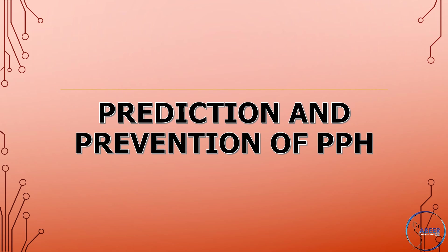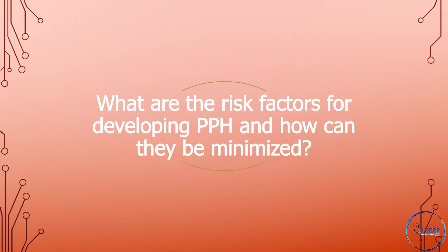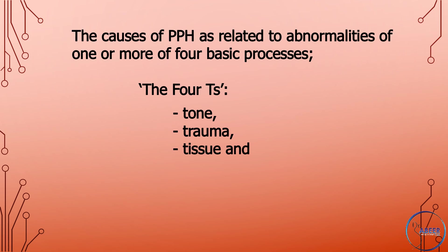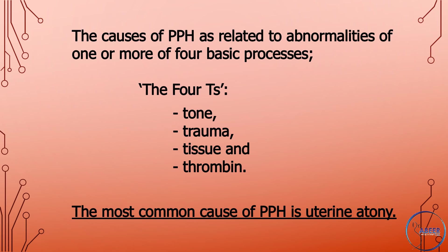Prediction and Prevention of Postpartum Hemorrhage: What are the risk factors for developing postpartum hemorrhage and how can they be minimized? The causes of postpartum hemorrhage are related to abnormalities of one or more of four basic processes — the four T's: tone, trauma, tissue, and thrombin. The most common cause of postpartum hemorrhage is uterine atony.